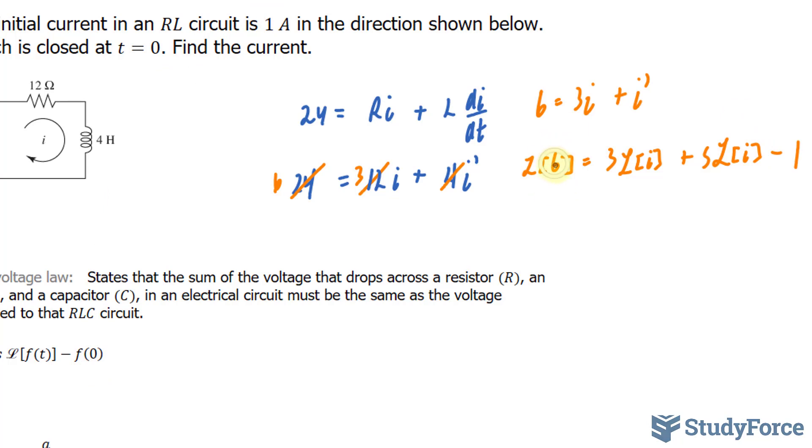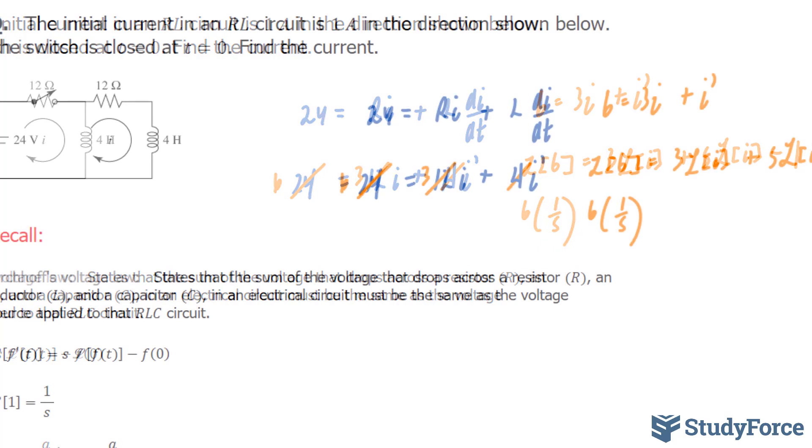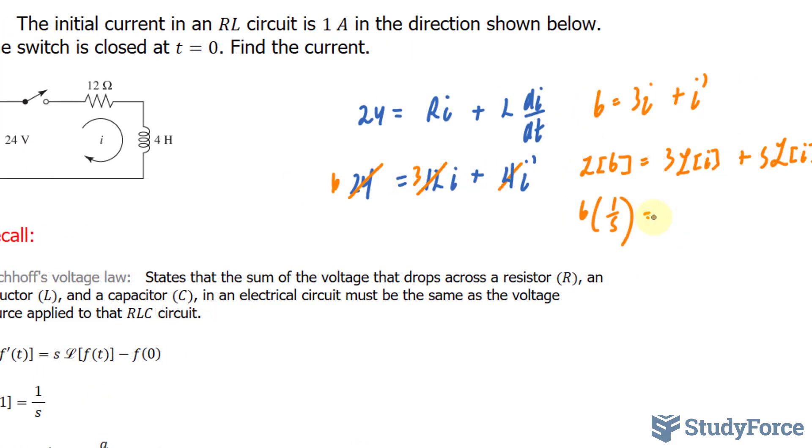The Laplace transform of a constant, in our case 6, is 6 times 1 over s. And that relationship is also shown right here. This is equal to 3 times the Laplace transform of I.